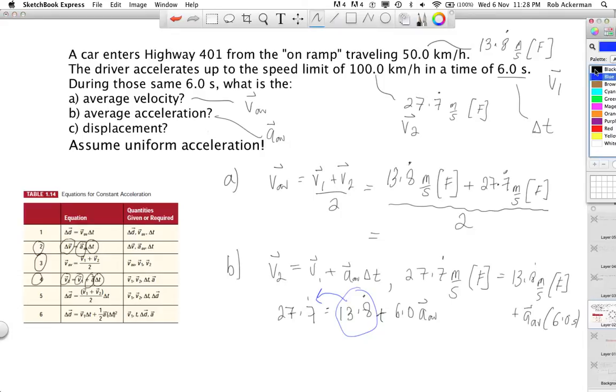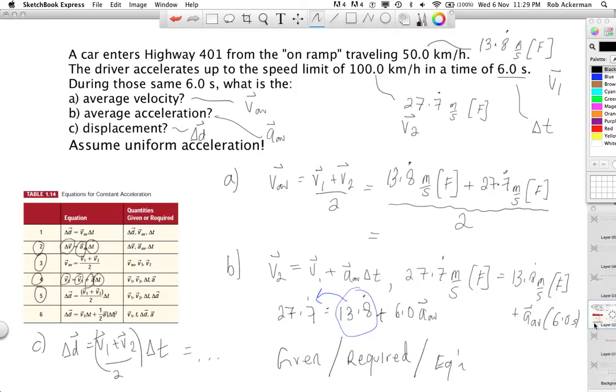Part c asks for the displacement. That is delta d. Do you have a formula that has delta d plus any combination of the other symbols that are involved? If you guess this one, you are right. We have v1, v2, and time. So for part c, we are going to use equation number 5. We are going to sub in the given velocities, add them, divide by 2, multiply by the time given, and I am going to leave that to you to finish. What I want to point out is this is really just a game, where what you are trying to do is to match up what is given with what is required. Think in terms of that. What's the given information? What's the required information? And how do I link them up with an equation?